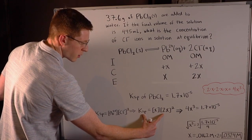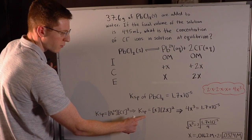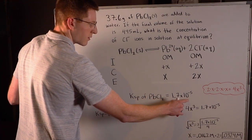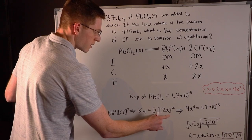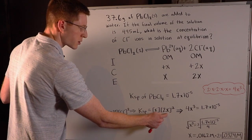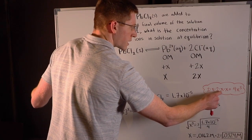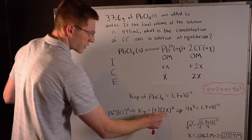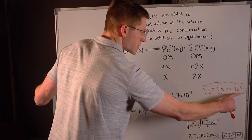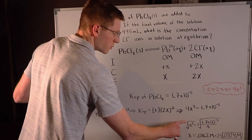Our KSP expression after the ICE table is X times 2X squared. The KSP of lead chloride from our table is 1.7 × 10⁻⁵. So we set X times 2X squared equal to 1.7 × 10⁻⁵. X times 2X squared equals 4X³, because 2X squared is 4X² and multiplying by X gives 4X³. I then isolated X by dividing both sides by 4 and taking the cube root.